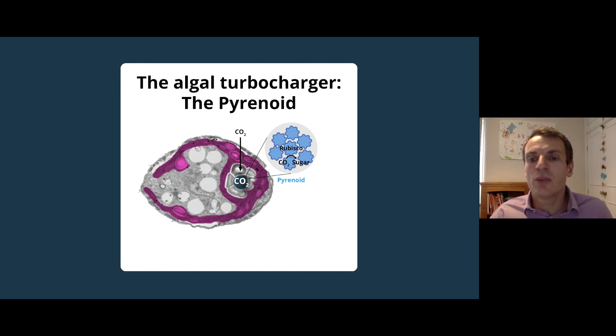Rubisco is one of the most important enzymes on planet Earth, as it is responsible for nearly all of the carbon dioxide fixed by living organisms. In order to maximize rubisco's efficiency, algae tightly package it into the pyrenoid.